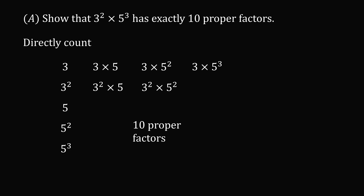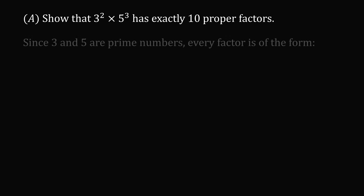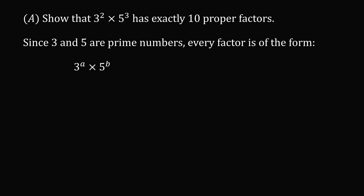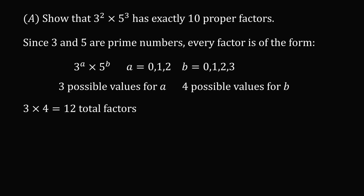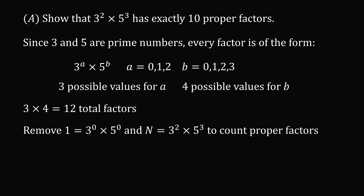But there's a way that we can verify the answer — we'll derive a formula. Since 3 and 5 are prime numbers, every factor has to be of the form 3 to the power of a times 5 to the power of b, where a equals 0, 1, or 2, and b equals 0, 1, 2, or 3. So there are 3 possible values for a and 4 possible values for b, giving 3 times 4 equals 12 total factors. We just remove 1 and n, so we have 3 times 4 minus 2, which equals 10 proper factors.